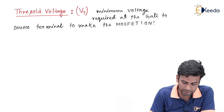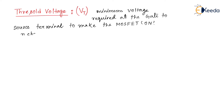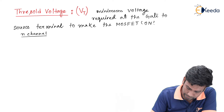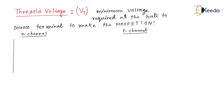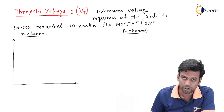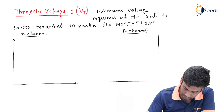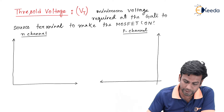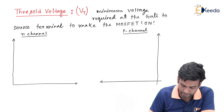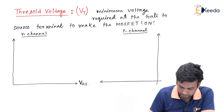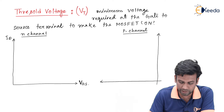We know that E-only MOSFETs are of two types. The first one is the N-channel E-only MOSFET and the second one is the P-channel E-only MOSFET. Let us draw the VT voltage for the N-channel and P-channel E-only MOSFET. The threshold voltage can be found from the transfer characteristics. The transfer characteristics for the N-channel will look like this, and the N-channel VGS voltage is positive, so we have drawn VGS on the positive axis.